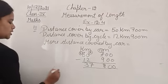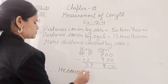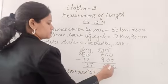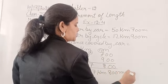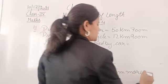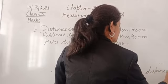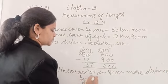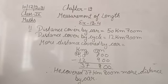Therefore, he covered 37 kilometer 800 meter more distance by car. This is the solution for question number 11. You can pause it here and note it down in your notes.